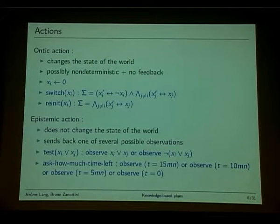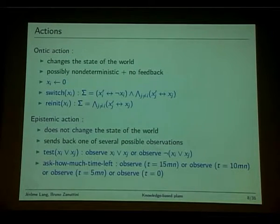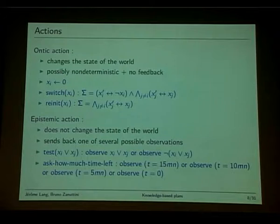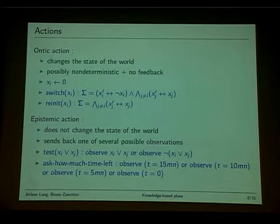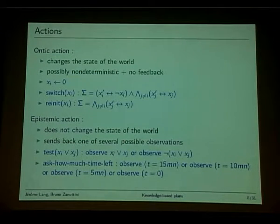An epistemic action does not change the state of the world, but it is meant to give feedback — to bring some new knowledge to the agent. This is expressed by means of a set of possible observations. The simplest is a binary test: for instance, test xi or xj sends feedback 'xi or xj' or 'not xi or xj' — yes or no. We also have non-binary epistemic actions, such as asking the value of a non-binary variable.